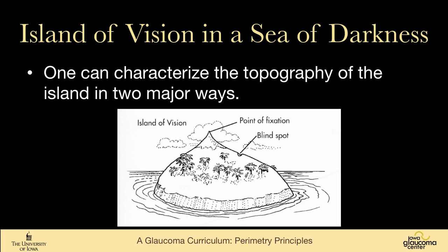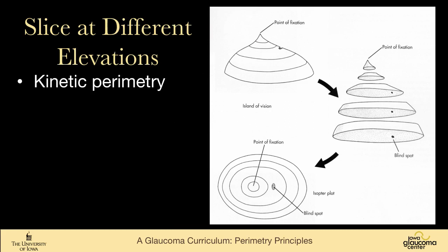You can characterize the topography of the island in two major ways. One way is to slice the island at different elevations. Here's our island of vision, and we've looked at how big the island is at different elevations. At sea level it's this size, and as we get closer to the fovea, it gets smaller and smaller. These rings at different elevations are called isopters, and they characterize the shape of this island quite nicely.